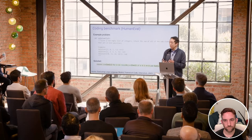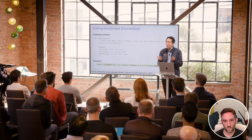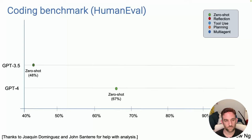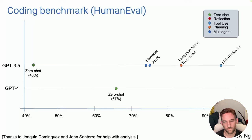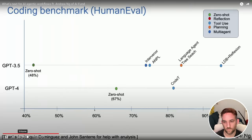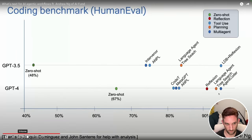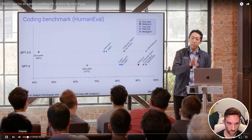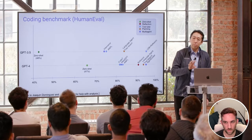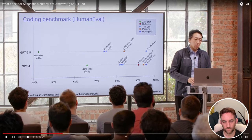Today a lot of us use zero-shot prompting — we tell the AI to write the code and have it run on the first pass. No human codes like that. It turns out that GPT-3.5 with zero-shot prompting gets 48% correct, and GPT-4 gets 67.7%. But if you take an agentic workflow and wrap it around GPT-3.5, it actually does better than even GPT-4 zero-shot.